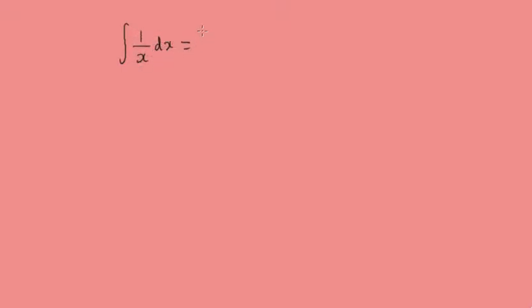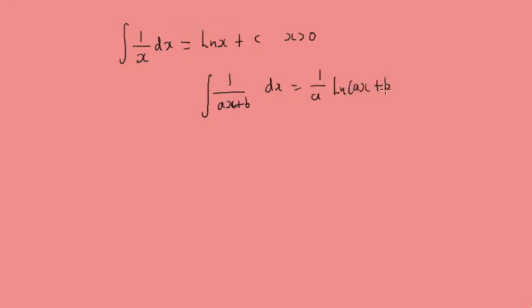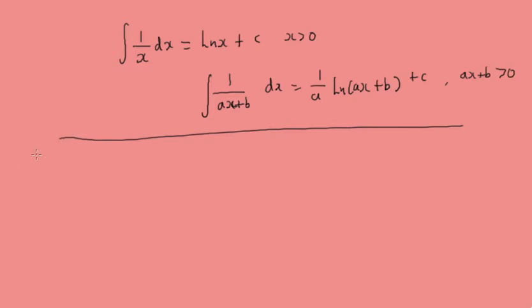Because integration is the opposite of differentiation, when you see a function of the form 1 over x dx, that's going to be the log of x plus c for x greater than 0. And the integral of 1 over (ax + b) dx is going to be 1 over a — which is the derivative of that function — times log(ax + b) plus our constant of integration, for values of ax + b greater than 0.